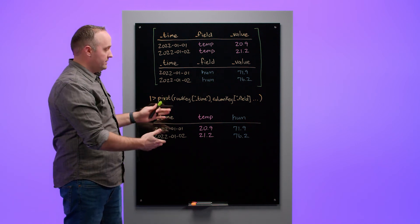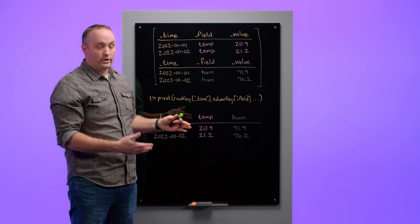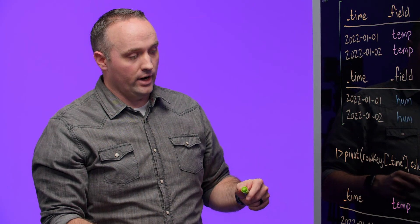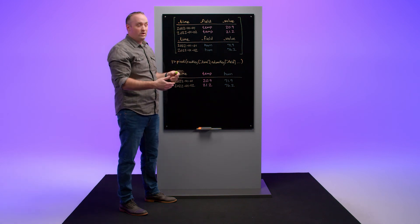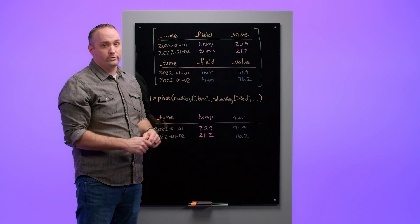Now you might look at this and say I could also do that with join, and you absolutely can. The only time you need to use join is if the schema of your data sets that you're bringing together are completely different, or if they're from completely different data sources. Because the schema of the two tables that we're pivoting together are the same, we can just use pivot and we don't have to use join.